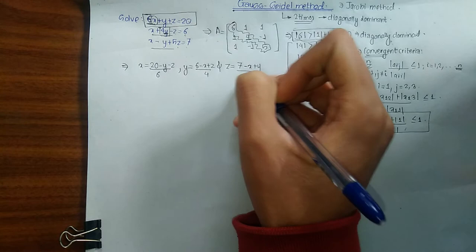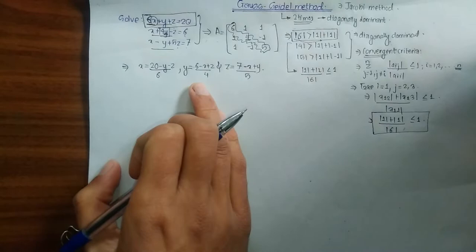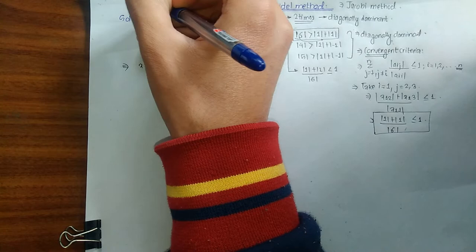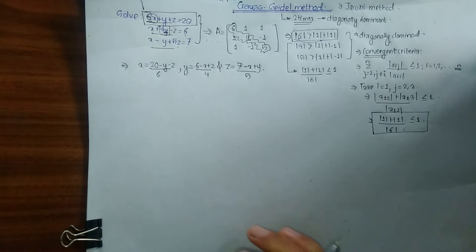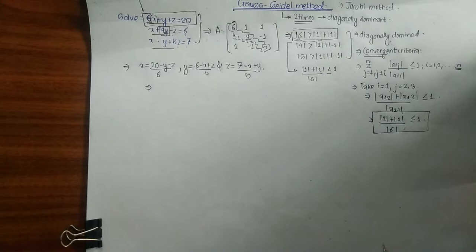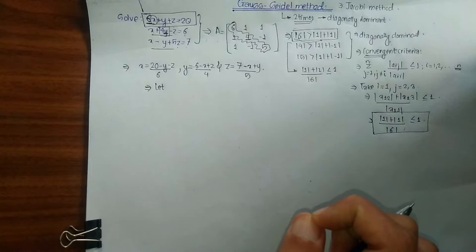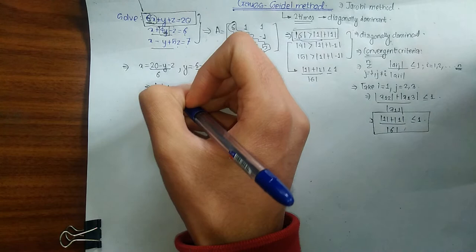We have written the three equations in terms of x, y, and z. We need to find the roots of this equation correct to four decimal places. We haven't been given any initial approximation, so we will consider x = 0, y = 0, z = 0 as our initial approximation.